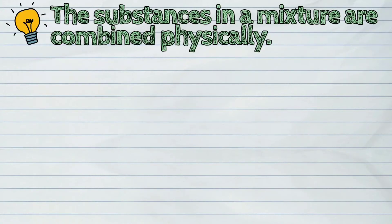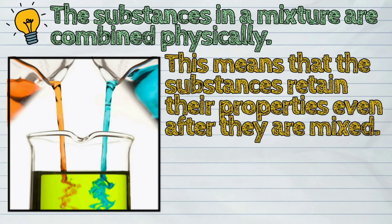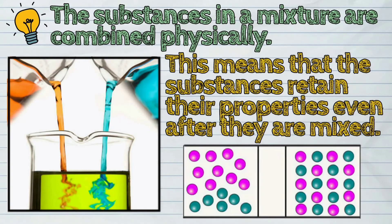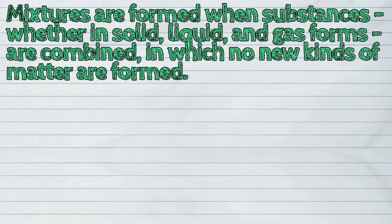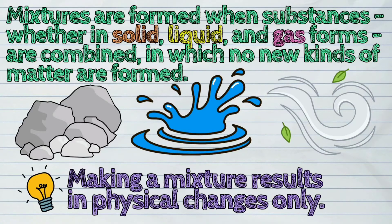The substances in a mixture are combined physically. This means that the substances retain their properties even after they are mixed. Mixtures are formed when substances, whether in solid, liquid, and gas forms, are combined, in which no new kinds of matter are formed. Making a mixture results in physical changes only.